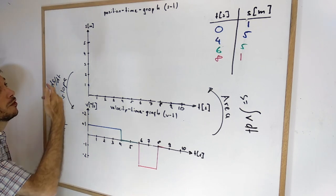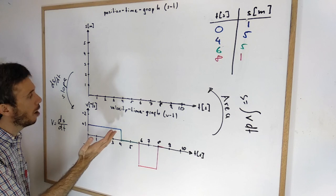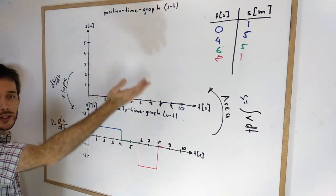So we learned that if we have a position time graph given, we can find the velocity time graph by looking at the derivative or the slope of the position time graph.